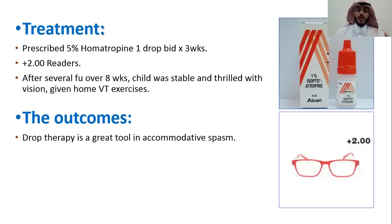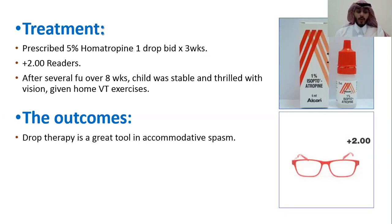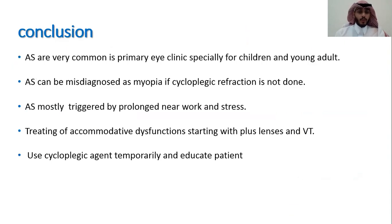The treatment: she was given homatropine drops twice a day for three weeks, and plus 2.00 reading glasses to help with near work. After several follow-ups, the child was stable and very pleased with the vision achieved. Vision therapy was also prescribed for her. This case shows the importance of cycloplegic drop therapy as a great tool in managing accommodation spasm.